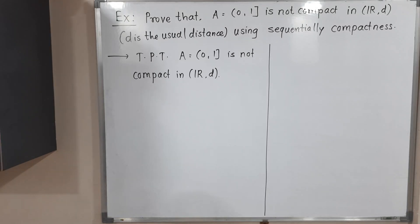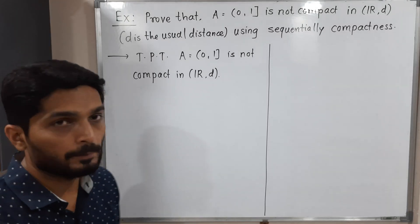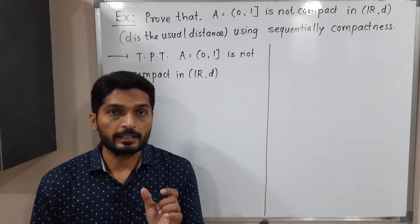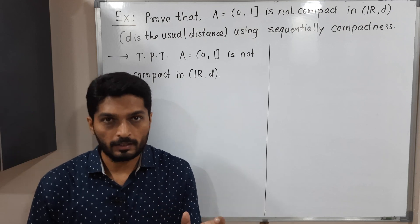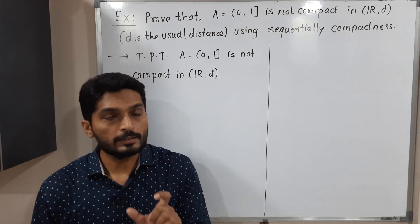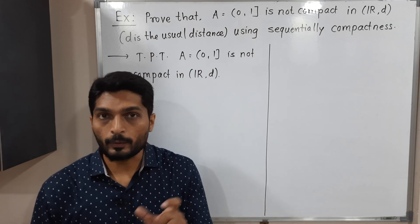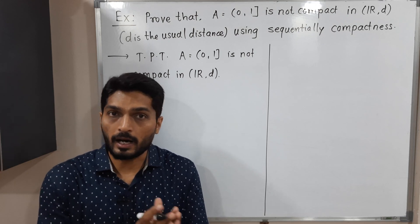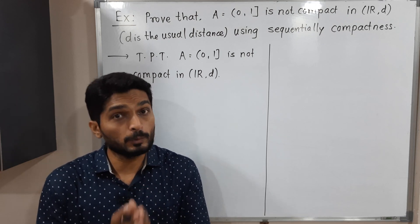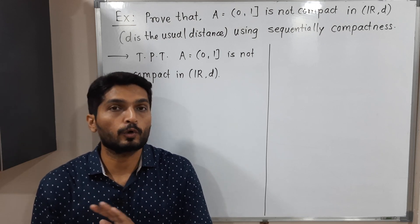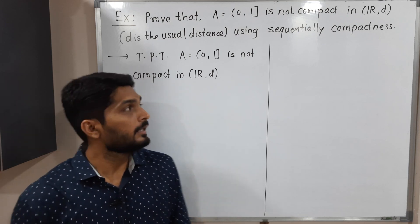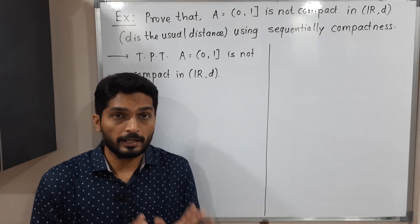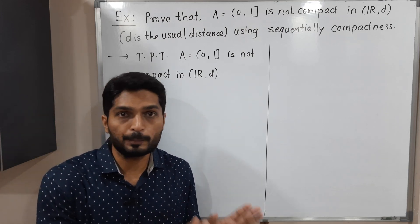Let us discuss this example. We have a set A which is an interval, open at 0 and closed at 1, so it is a set in ℝᵈ. We have to prove that it is not compact in ℝᵈ.